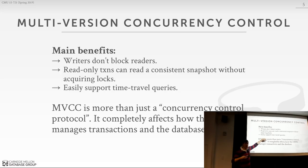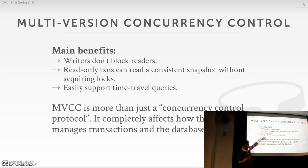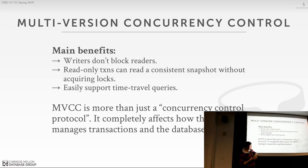It wasn't until Postgres started being used outside academia around 1998-99, when they forked from the Berkeley version and added SQL support, that they realized if you don't have garbage collection you'll run out of space really quickly. So they removed it. Only recently has Postgres added back support for explicit time travel queries — a combination of turning off garbage collection and exposing extra SQL commands.